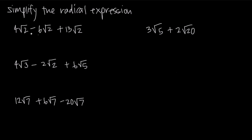Looking at the square roots, I can see I have square root of 2, square root of 2, and square root of 2 — these three are all the same; they're like terms, so I can combine them. You could substitute x for square root of 2 in your head and say this is 4x minus 6x plus 13x. It's the same thing — 4 square root of 2s, minus 6 square root of 2s, plus 13 square root of 2s.